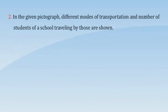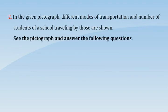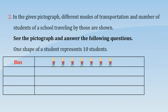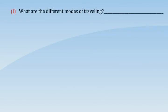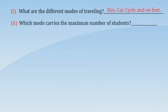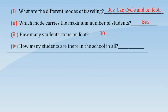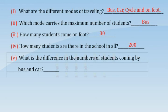In the given pictograph, different modes of transportation and the number of students of a school traveling by those modes are shown. See the pictograph and answer the following questions. One shape of a student represents 10 students. Modes shown: bus, car, cycle, on foot. Questions: What are the different modes of traveling? Which mode carries the maximum number of students? How many students come on foot? How many students are there in the school in all? What is the difference in the numbers of students coming by bus and car?